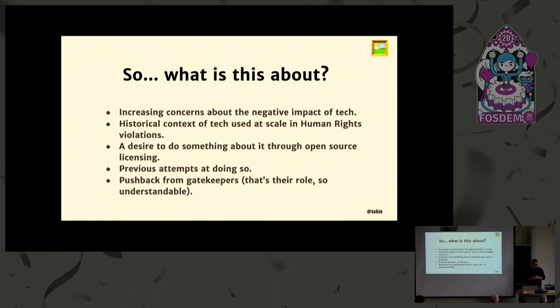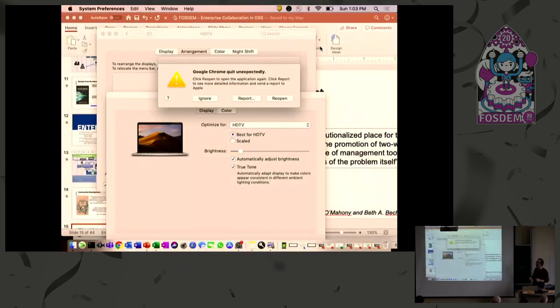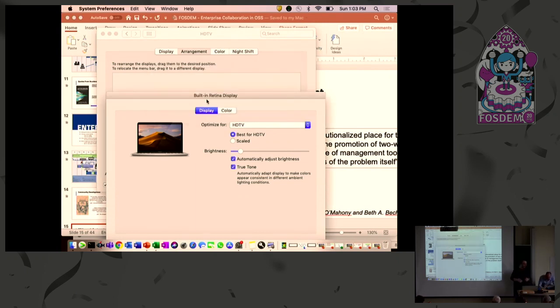When you start to see what's happening with technology right now, there's historical precedent of technology being used in horrible ways in the past. For example, I'm thinking about punch cards used by Nazi Germany to administer concentration camps. This is also obviously a concern.